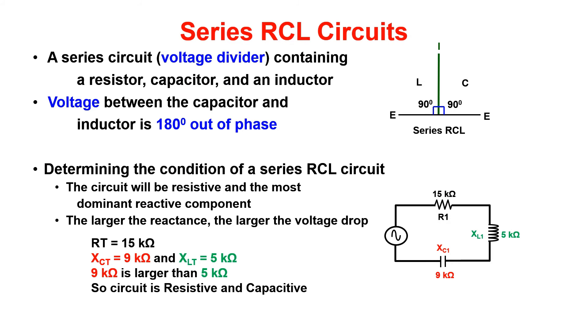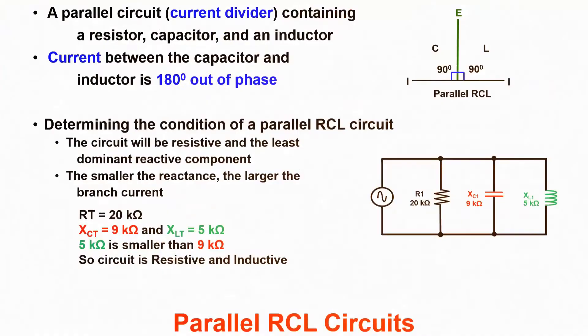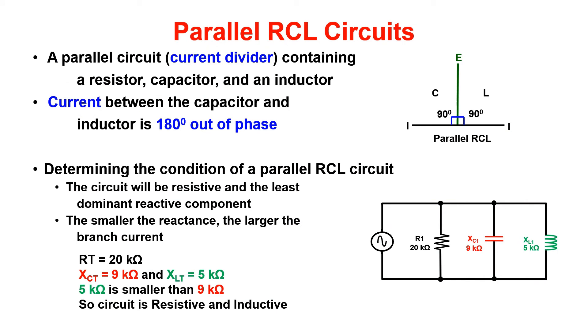Easy enough. Now for parallel RCL circuits. A parallel RCL circuit contains, if you were about to say a resistor, an inductor, and a capacitor, you would be right. If not, you haven't been paying attention.